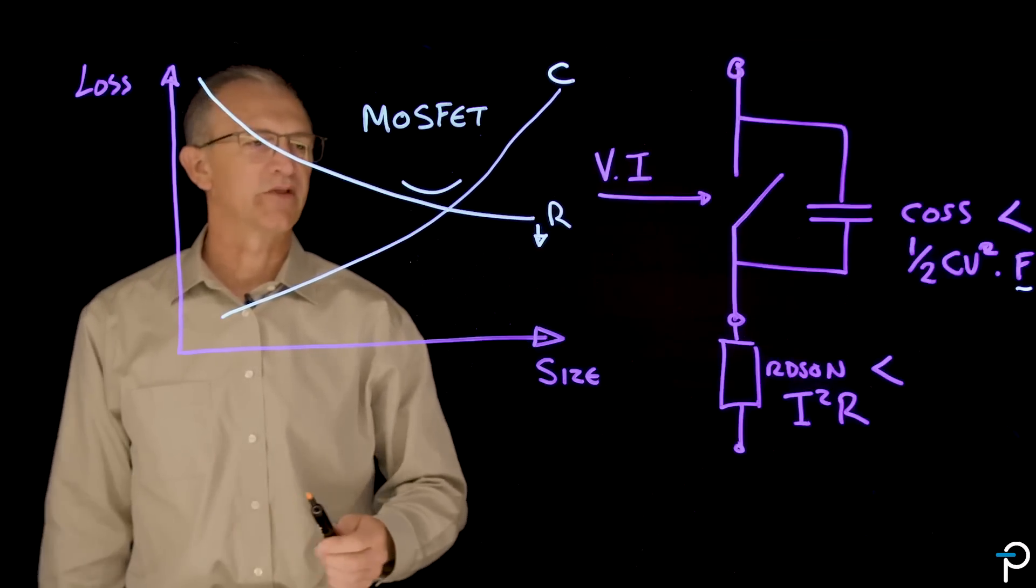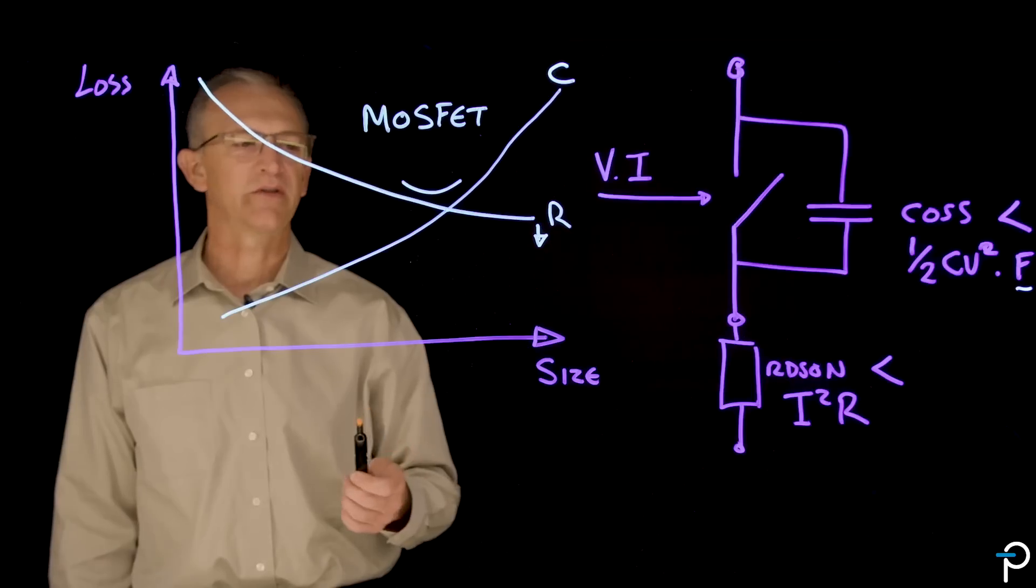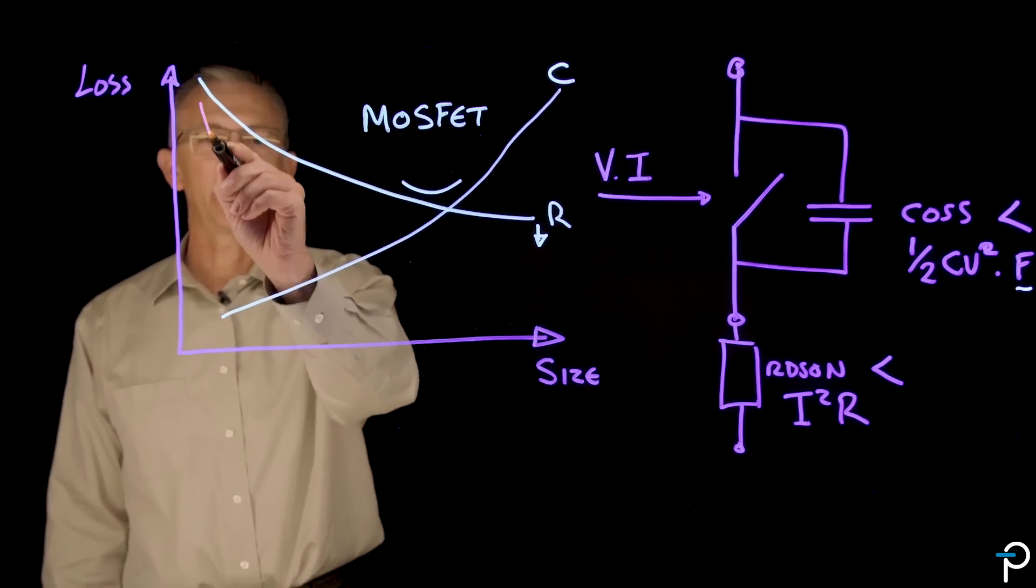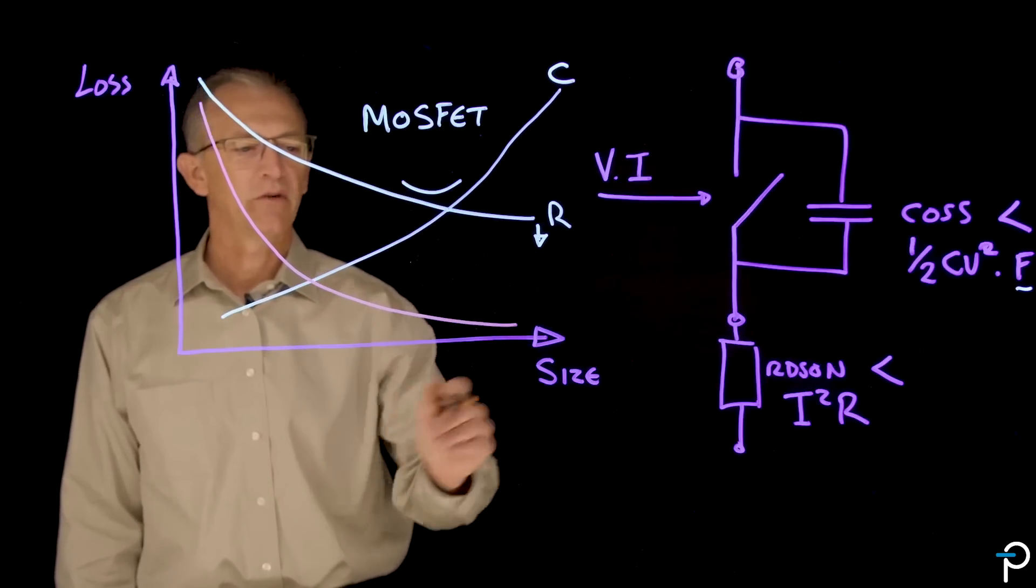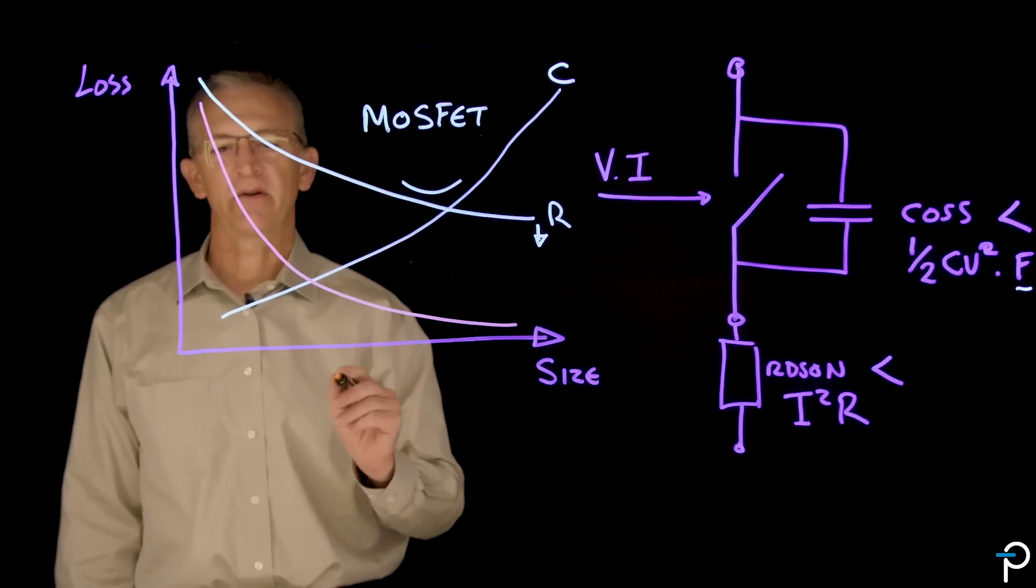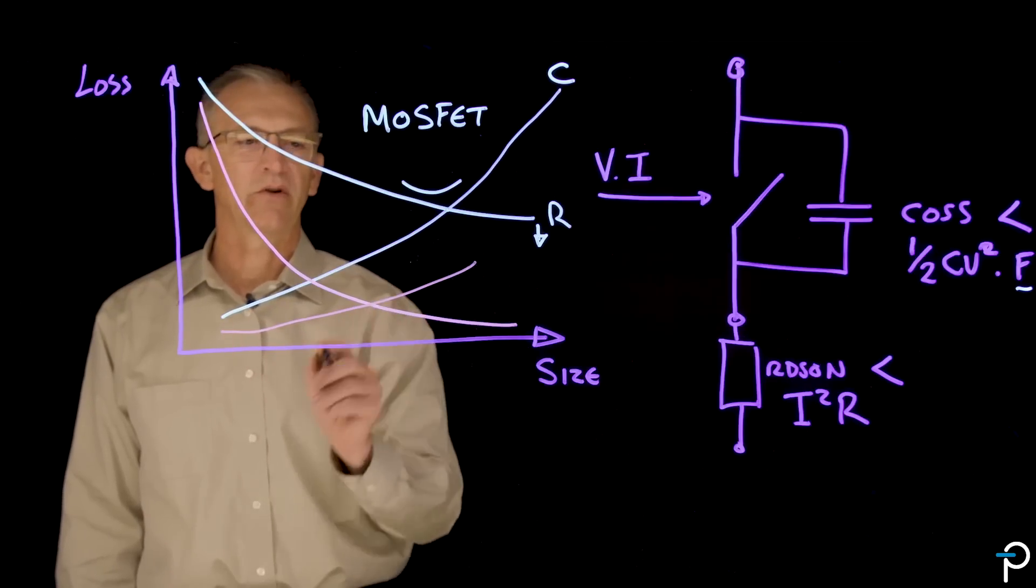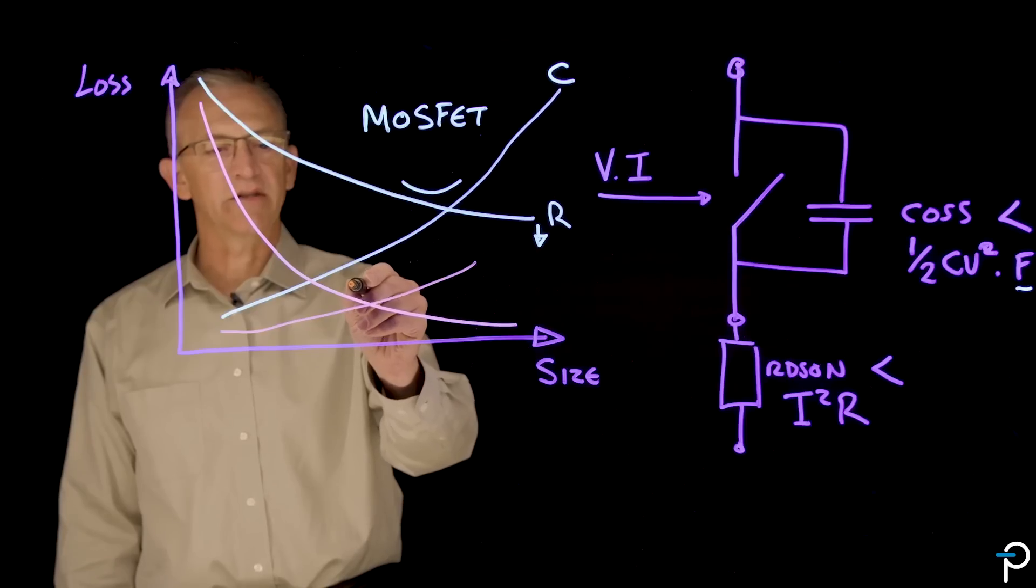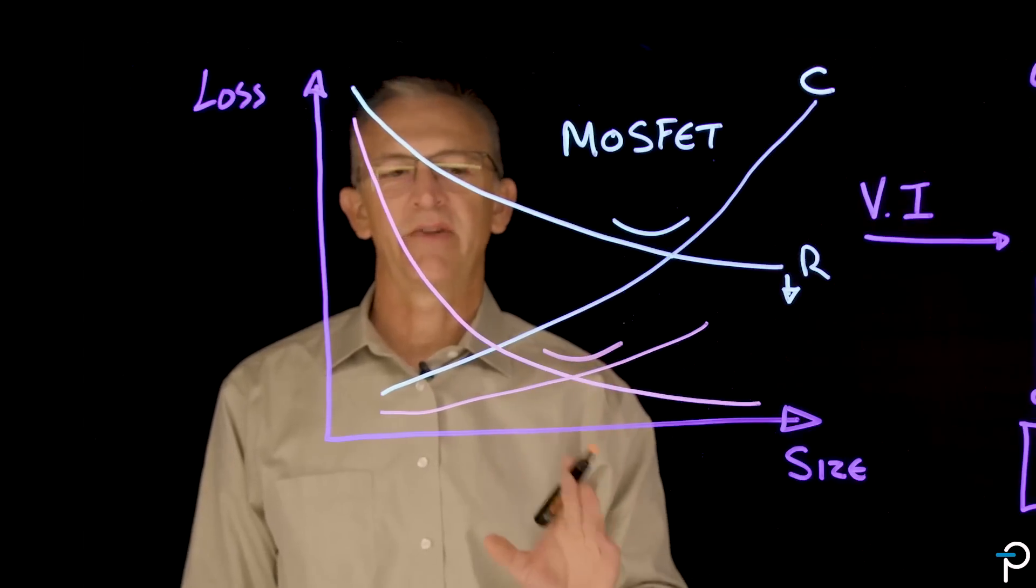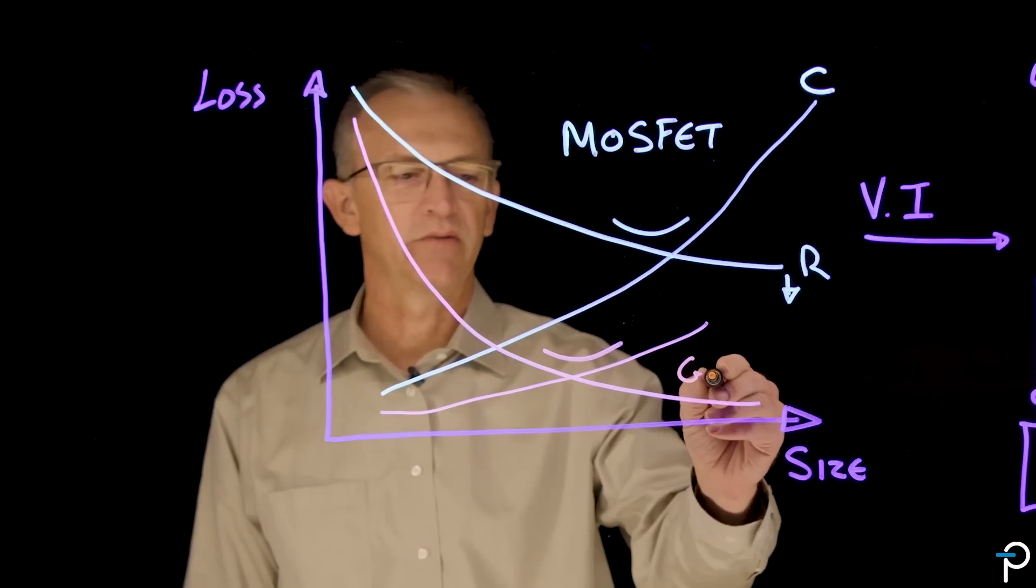Now, gallium nitride is a very special substance in that its specific RDS-on, the RDS-on related to the physical size of the device, is very low. And so that provides us with a far steeper decline of RDS-on related to physical size. And the marvelous thing about that is that the capacitance is also very low. So it still starts down here close to the origin, but it's a much shallower curve. So gallium nitride losses occur at a minimum around about here.